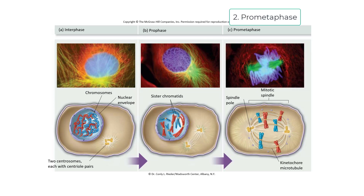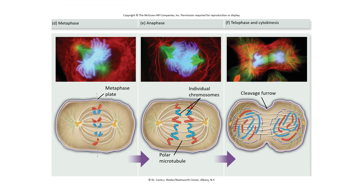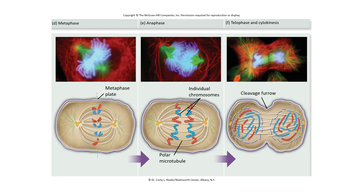During prometaphase, the mitotic spindle will bind to the chromosomes and begin to move them towards the center. The nuclear envelope will also break down, which allows those chromosomes to travel outside of the nucleus. Then we have metaphase, where the mitotic spindle lines up all of the chromosomes along the metaphase plate. Then we have anaphase, where the individual chromosomes separate — the mitotic spindle binds to each of the sister chromatids and pulls them apart. We remember this by: Anna and her sister separate during anaphase.